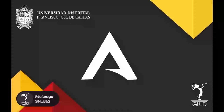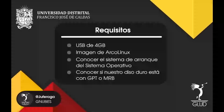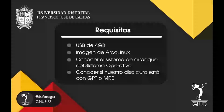Primeramente, lo que vamos a requerir para realizar la instalación de Arco Linux es: primero, una USB de 4 GB; la imagen de Arco Linux; conocer el sistema de arranque del sistema operativo, es decir, si es con BIOS o con UEFI; y conocer si nuestro disco duro está con GPT o MBR.